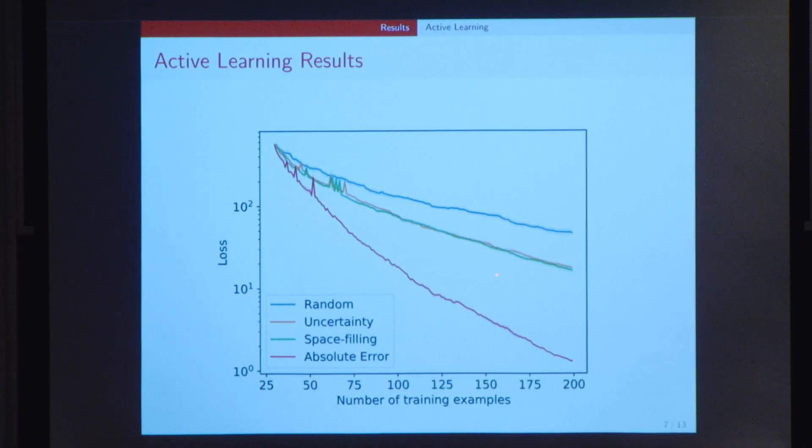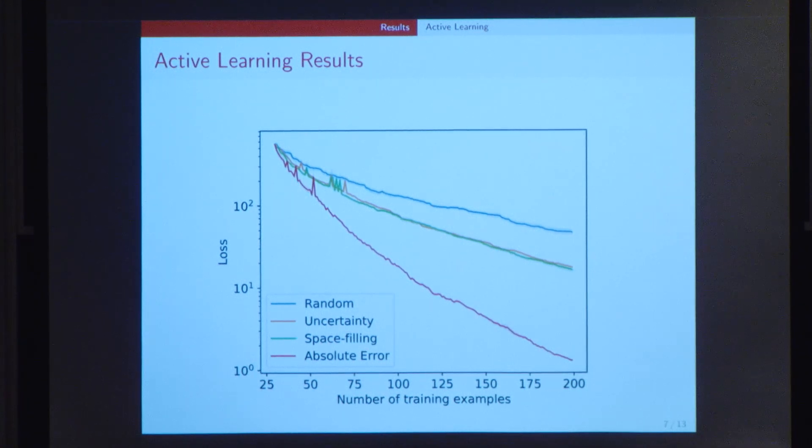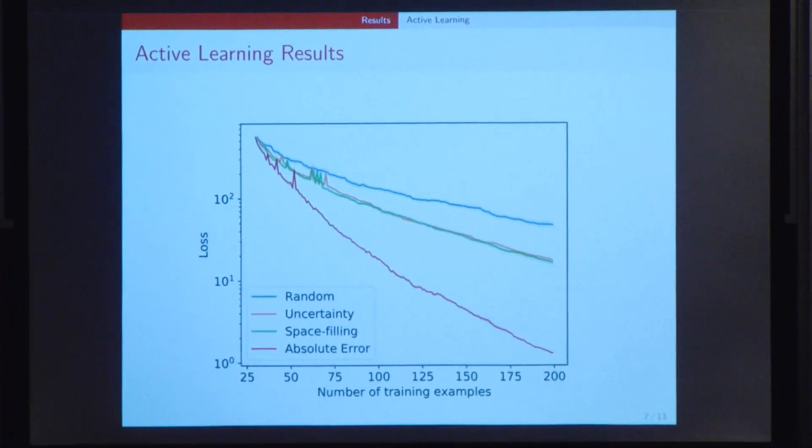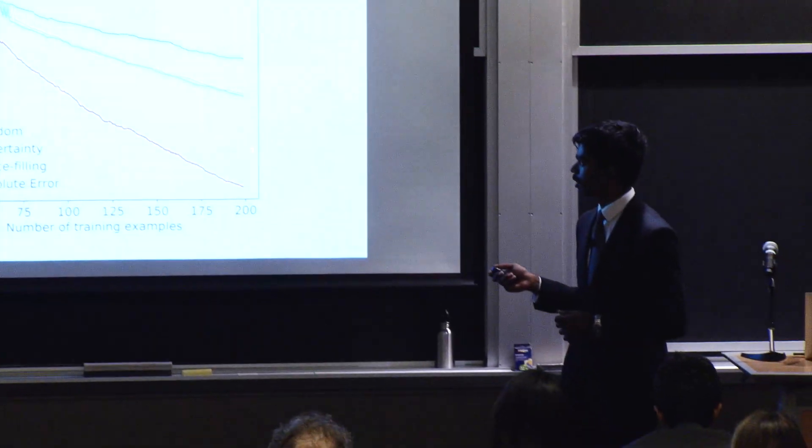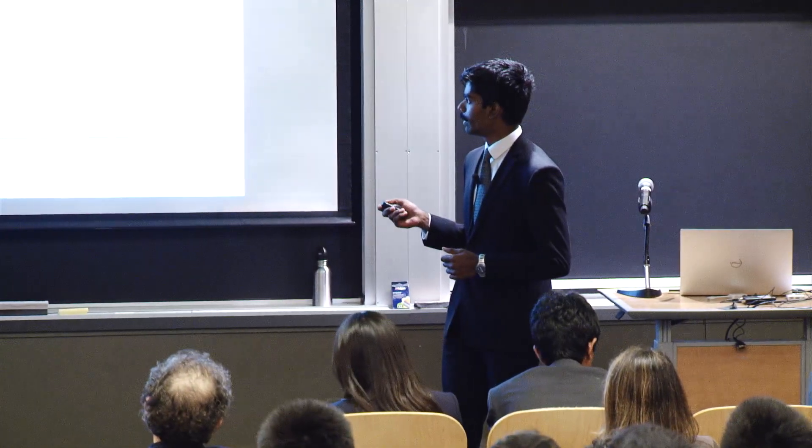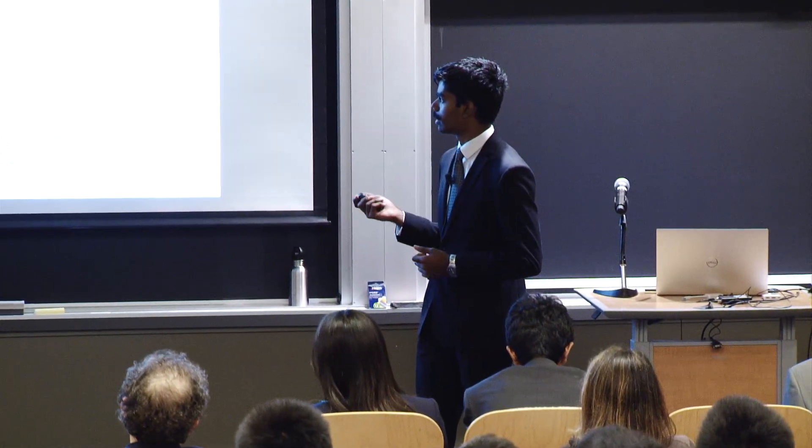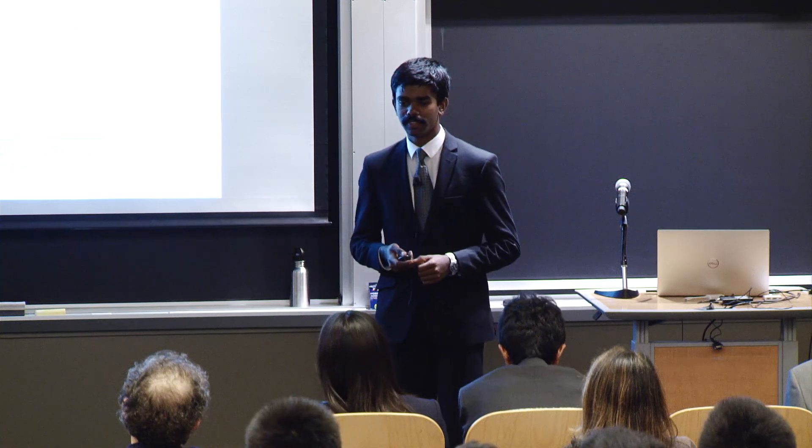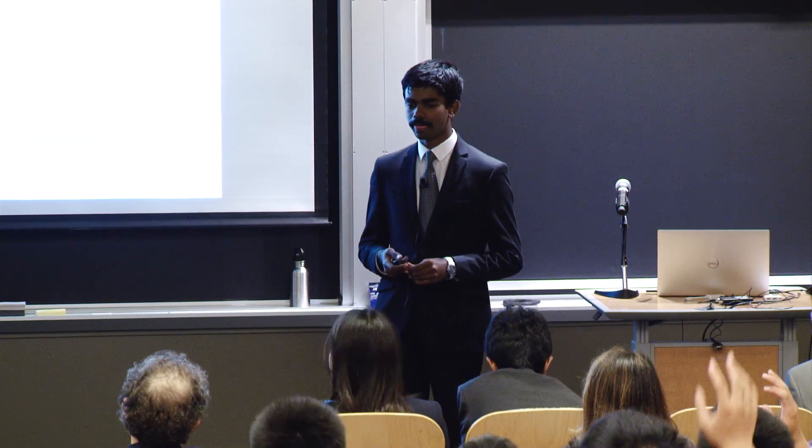And coming to the second part of your question, between uncertainty and space-filling, we also did plot the relation between uncertainty and space-filling. And what we observed was that both of them were highly correlated, at least for the lower input dimensionalities. For example, for the two-layered nanoparticles, we saw that the Pearson correlation coefficient was around 0.87, which is probably one reason as to why both of them performed very similarly. But between the two, the space-filling algorithm performed slightly better, I guess, because it reduced the loss slightly faster.